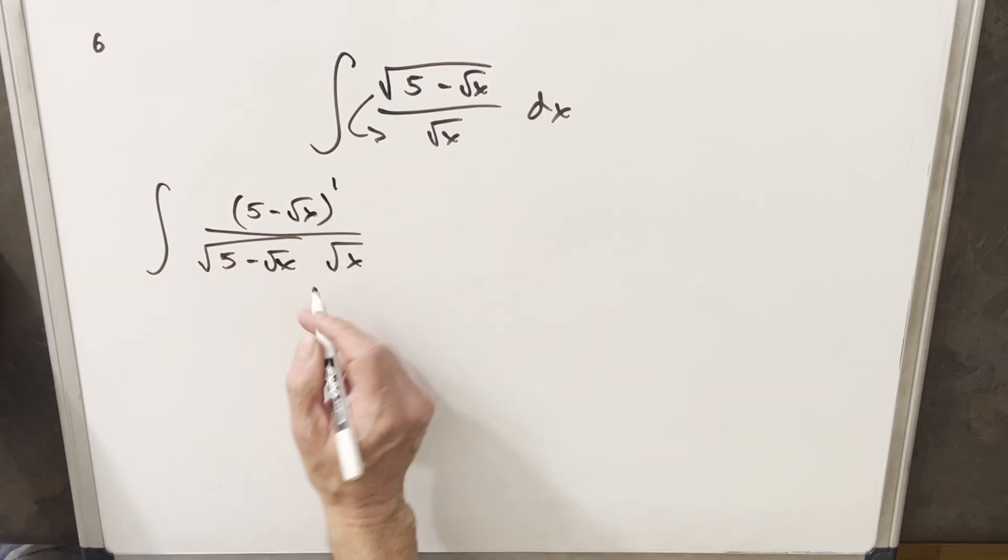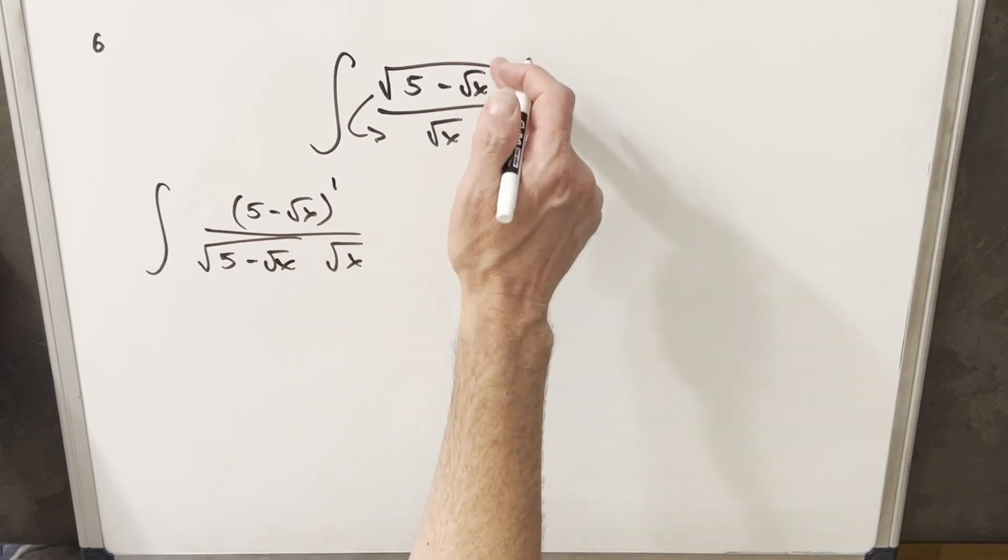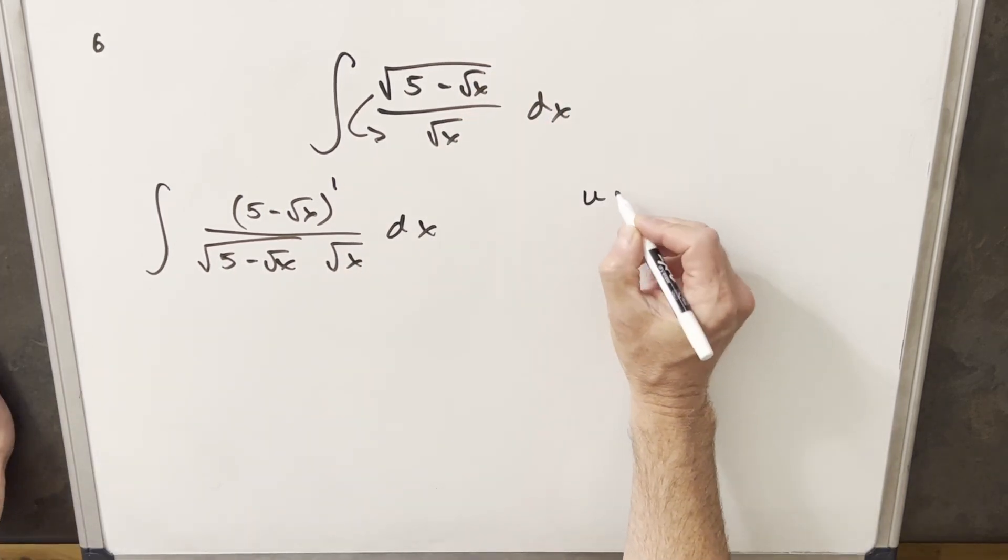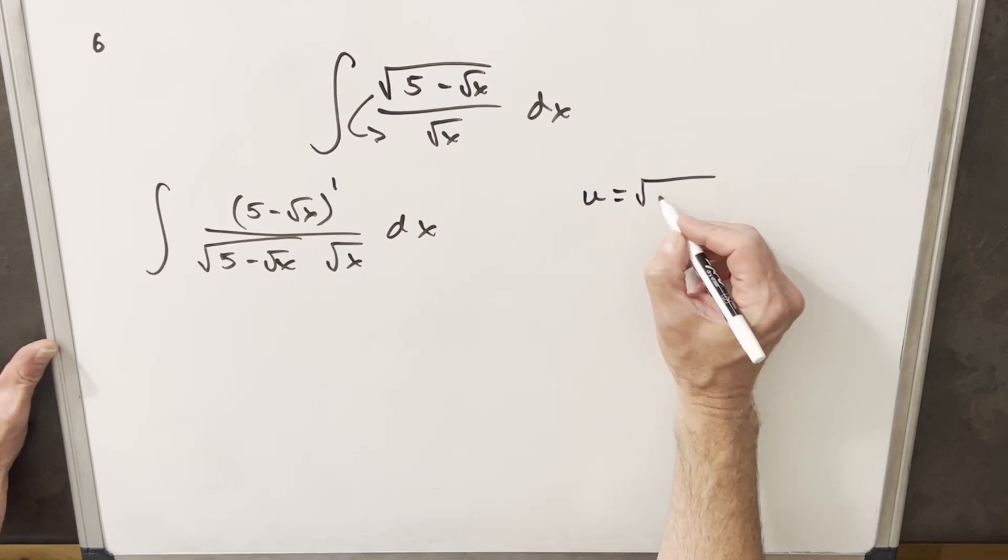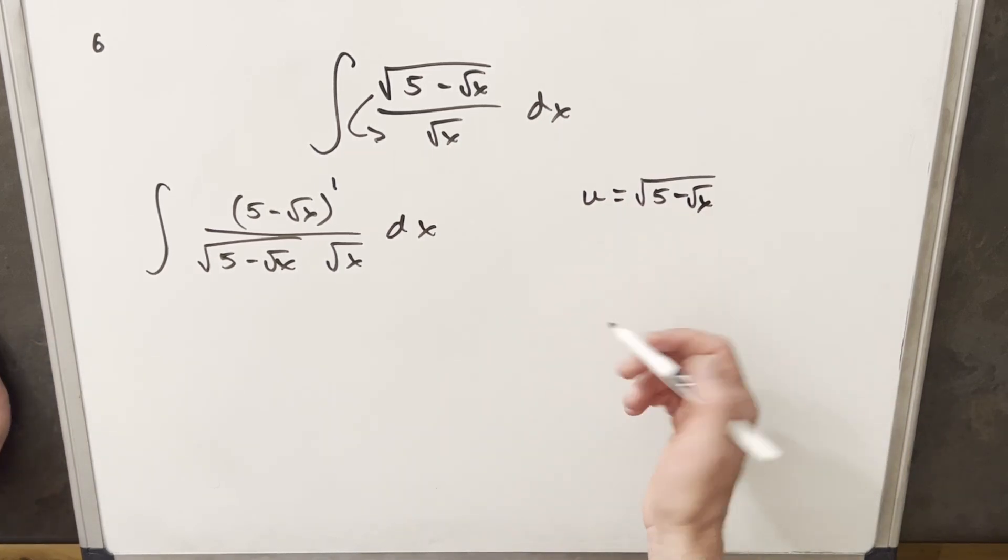If you think about this as a one power here and a half power here, and you divide them, you get back to half in the numerator. So I haven't changed it. And then I'm still going to do the u substitution like you would anyway. So this is not going to make a huge difference. It's just a preference thing of how I like to set it up.